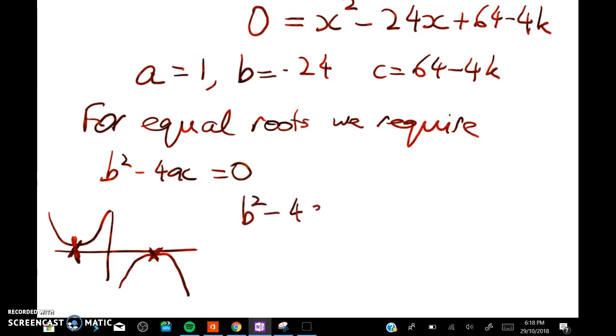So b squared minus 4ac is equal to negative 24 squared minus 4 times 1 times 64 minus 4k. That has to equal 0.